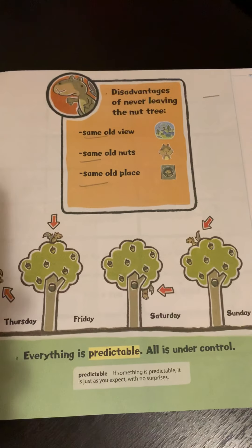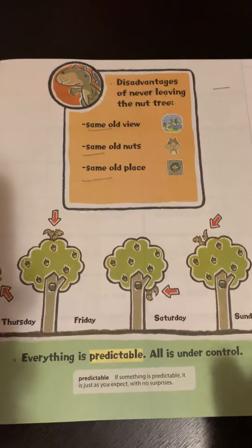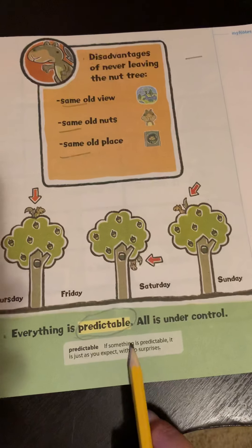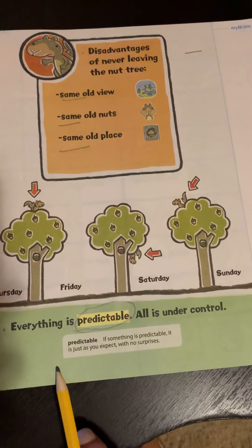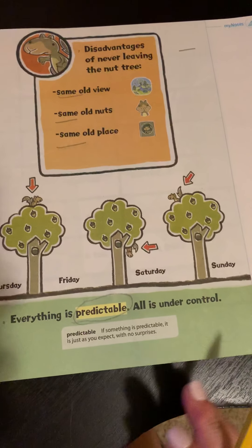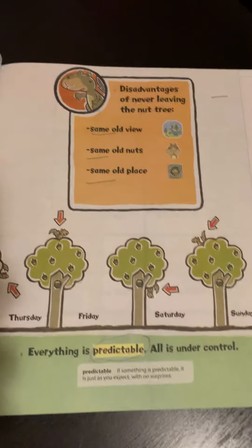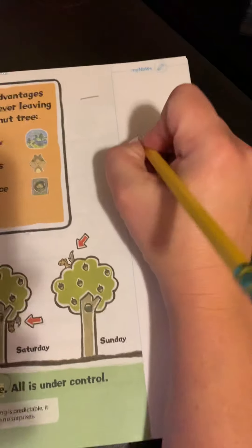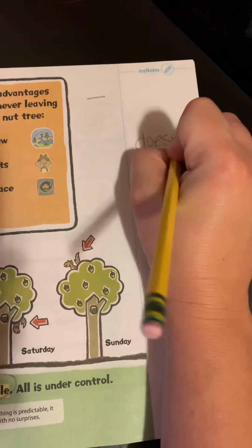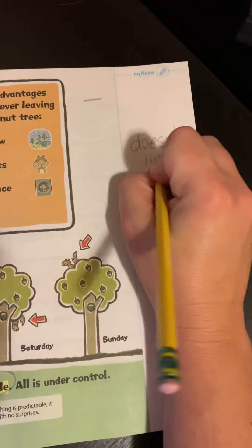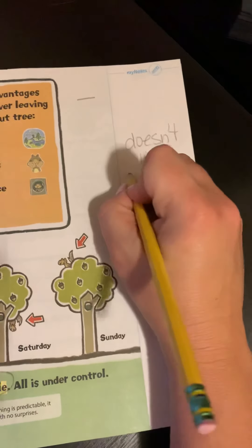Everything is predictable. All is under control. If something is predictable, it is just as you expect with no surprises. Scaredy Squirrel does not like surprises.